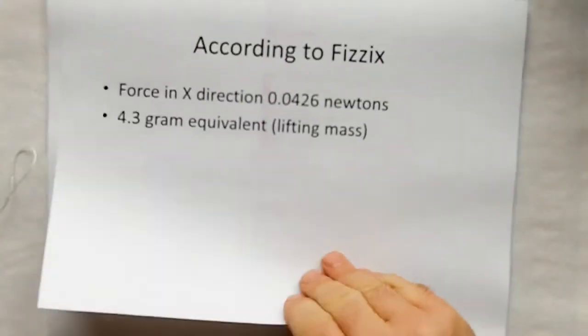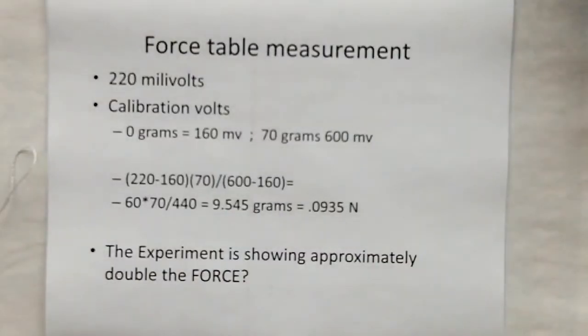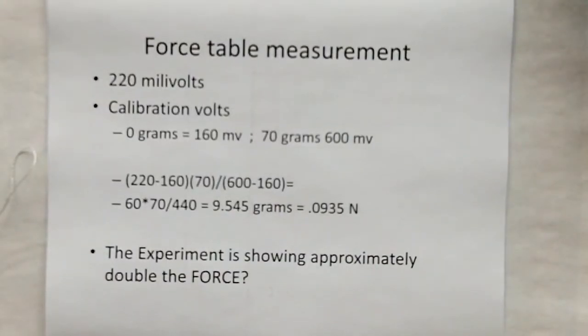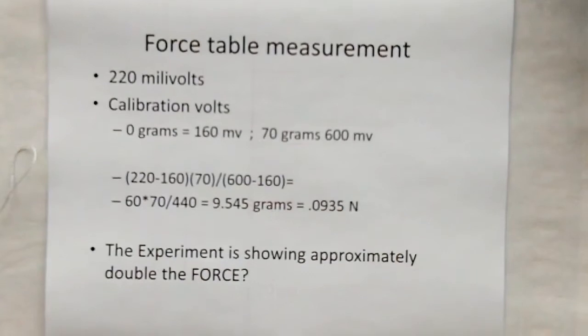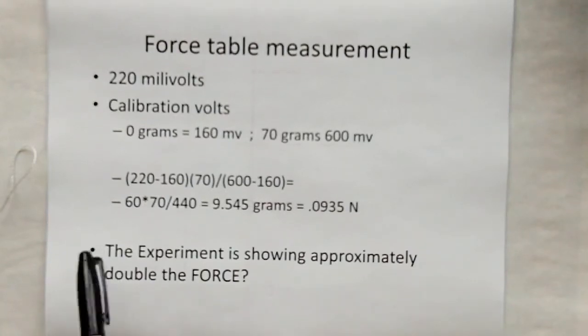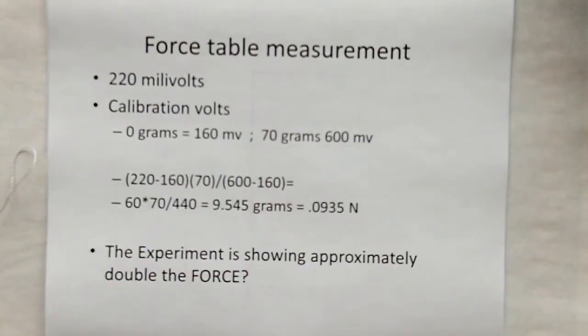Returning from that video, I said we're getting twice as much force, because I already knew that 220 millivolts on the force table is about double what we should expect. Based on the calibration, when you have zero grams of weight on the table, you've got 160 millivolt output. When you have 70 grams of mass on the table, you get 600 millivolt output.